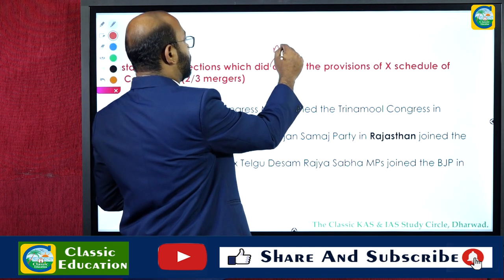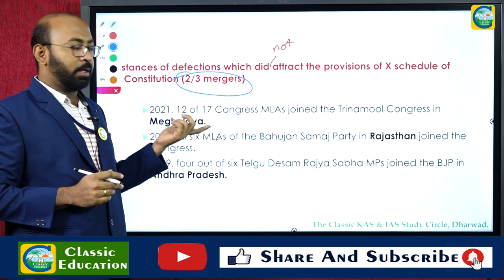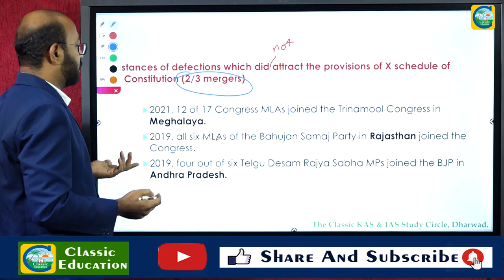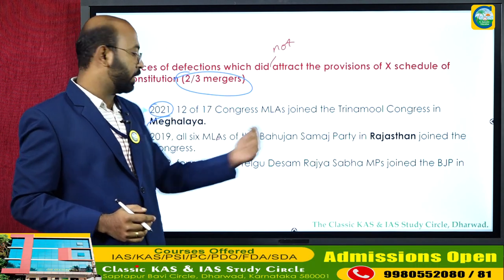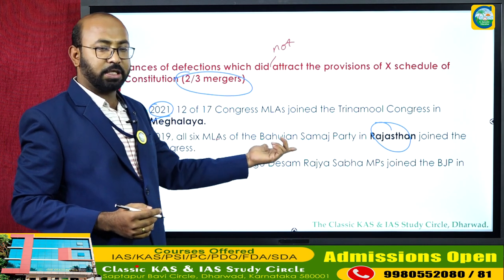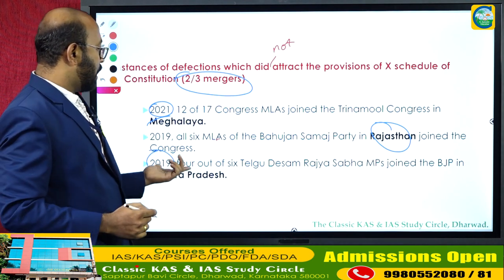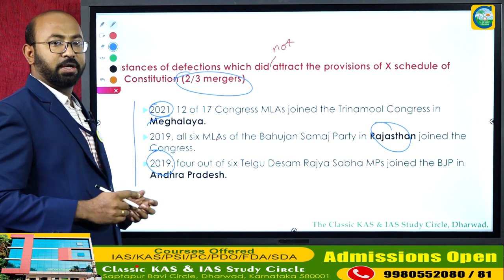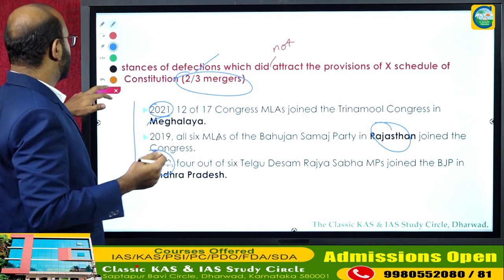Recent instances where the two-thirds rule was met and members were not disqualified: In 2022 in Meghalaya, 12 out of 17 Congress MLAs joined the Trinamool Congress. In Rajasthan in 2019, all BSP MLAs joined the Congress. Also in 2019, four out of six Telugu Desam Party members in the Rajya Sabha joined the BJP. All these mergers met the two-thirds requirement and therefore did not attract disqualification.